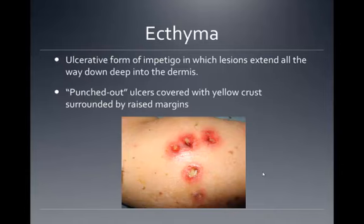Ecthyma is an ulcerative form of impetigo in which lesions extend deep into the dermis. The punched-out ulcers are covered with yellow crust surrounded by raised margins.